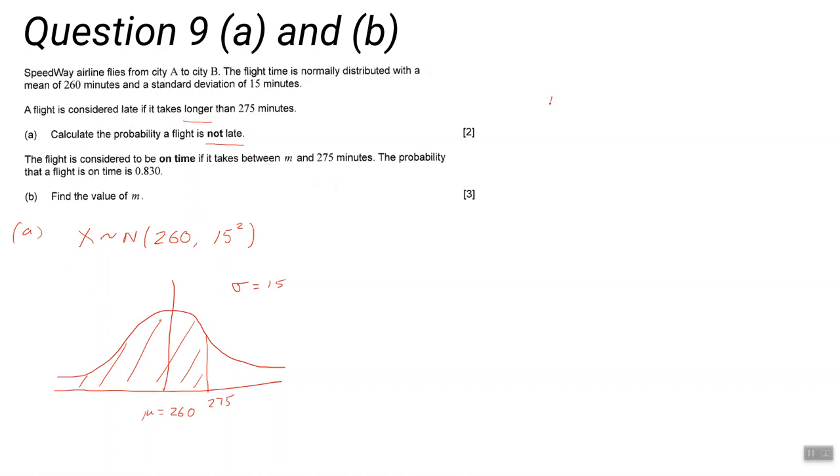Part B is a little more challenging, but again we've got the same probability distribution, so we don't need to write that out again. But we should do another sketch so we can have a look at the graph. Again, sigma is 15 and the mean is 260.